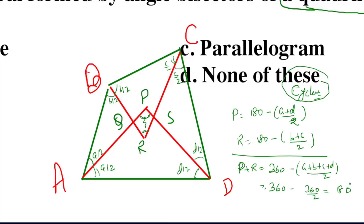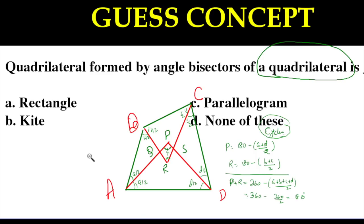So it is not a rectangle. If I zoom it out, so the answer of this question is not rectangle, not kite, not a parallelogram, the answer is cyclic, so answer is none of these.